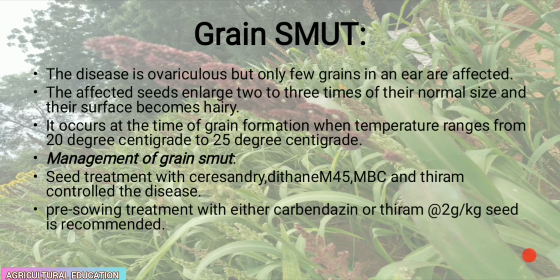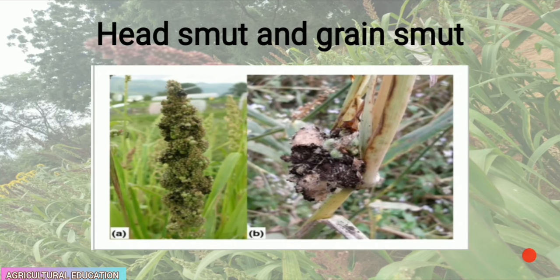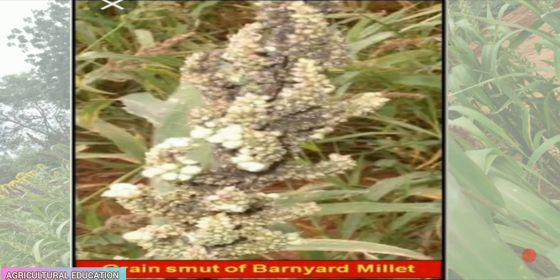Grain smut is rare but a few grains in an ear are affected. The affected seeds enlarge two to three times their normal size and their surface becomes hairy. It occurs at the time of grain formation when temperature ranges from 20°C to 25°C. Management: seed treatment with Dithane M-45, MBC, and thiram controls the disease. Pre-sowing treatment with carbendazim or thiram at 2 grams per kg of seeds is recommended.